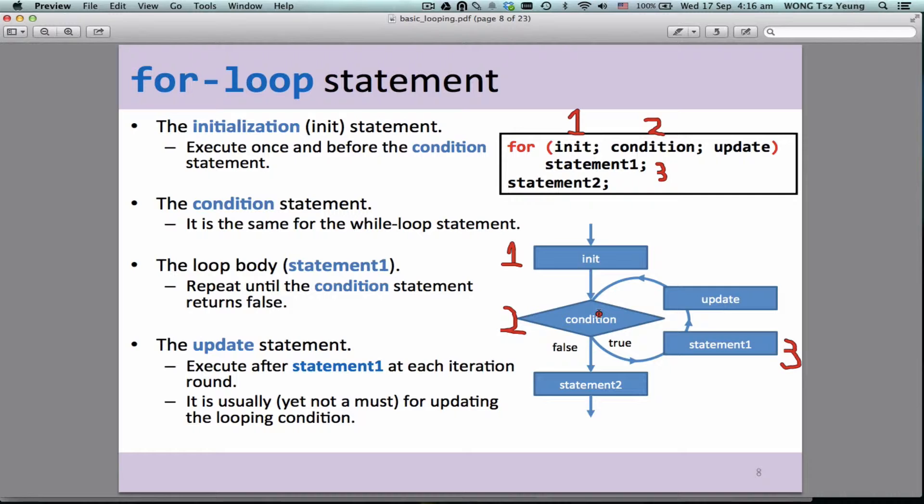But for loop is very clever. It knows that there is an update statement. It knows that you need to update something so that the condition may have a chance to get false. So after finishing the whole looping body, it will execute the update. Wow, cool. This seems to be a very sexy thing.